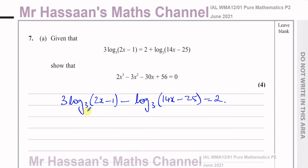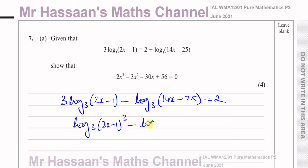Now I want to combine these log terms together into one log term, and then I can get rid of the logs. I cannot bring these two terms together when there's a number multiplying the log — I have to use the power law. So this becomes log₃(2x − 1)³ − log₃(14x − 25) = 2. I've used the power law.